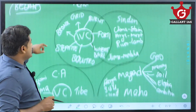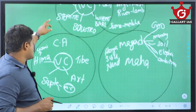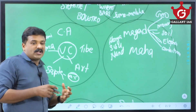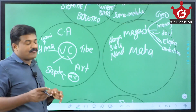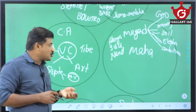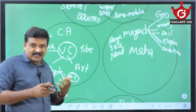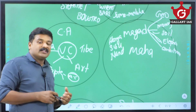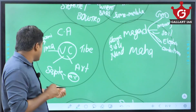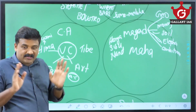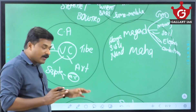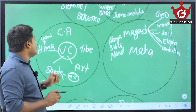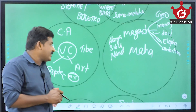Coming to the Vedic Age — different theories exist about the Aryans. There is the Central Asian theory by Max Müller; the Tibetan theory that they migrated from Tibet by Dayanand Saraswati; the Arctic region theory by Bal Gangadhar Tilak; the Saptasindhu theory that they are not from outside but from the Saptasindhu region by A.C. Das; and the Himalayan foothills theory by Lakshminarayan Rao. There are many different theories regarding the arrival of the Aryans in India.